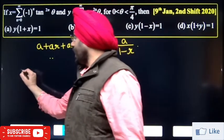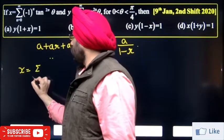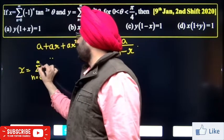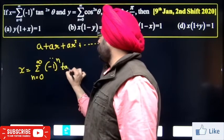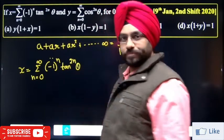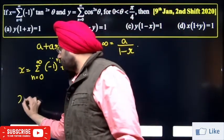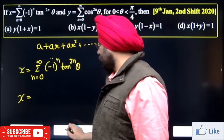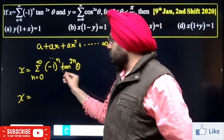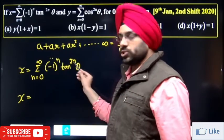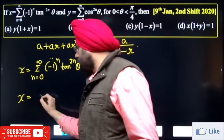X is equal to summation n equals 0 to infinity of minus 1 raise to power n times tan²n of theta. First, start by putting value of n = 0. Put n = 0: minus 1 raise to power 0 is 1, tan raise to power 0 is 1. So the first term is 1.